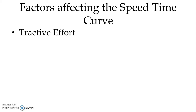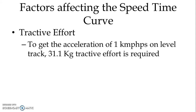To run any train on the track, we require tractive effort. For the propulsion of the locomotive, tractive effort is required, and we get tractive effort from the speed-torque characteristic of the traction motor. Tractive effort is a function of train resistance — once tractive effort equals train resistance, we will have maximum speed. To get an acceleration of 1 km per hour per second on a level track, 31.1 kg of tractive effort is required.